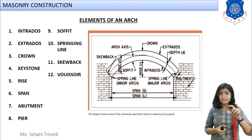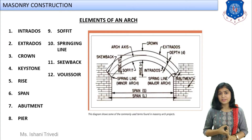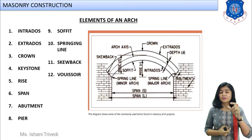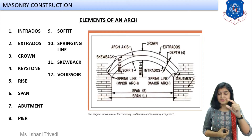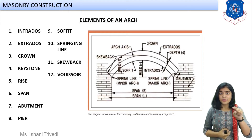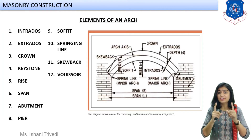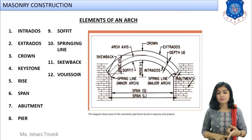The rise is the vertical distance between the intrados of the arch and the line joining both supports. The span is the clear horizontal distance between the two supports of an arch.